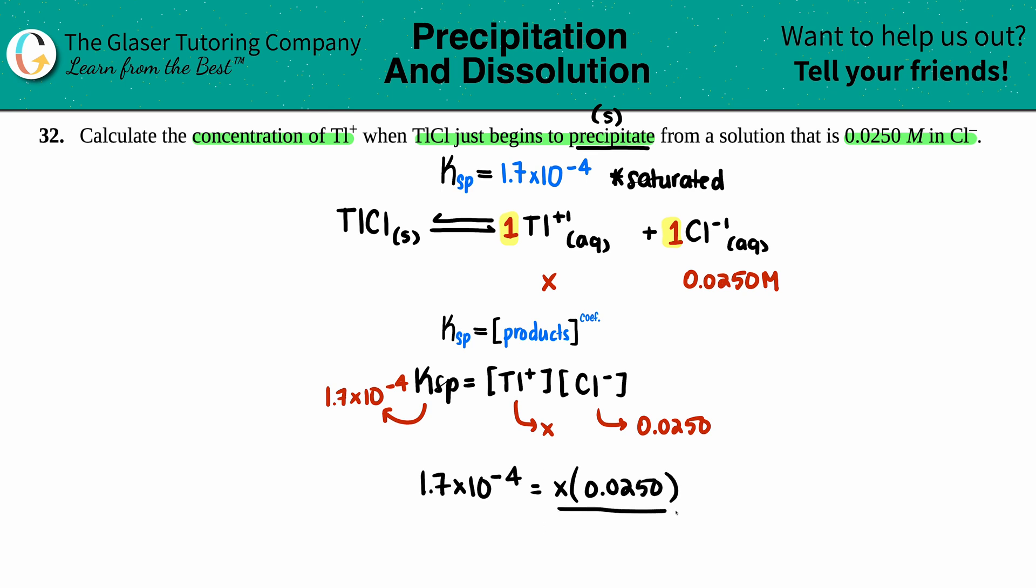We want to solve for x, so just divide by 0.0250. Easy as that. Calculator is out, let's get it done: 1.7 × 10^-4 divided by 0.025.